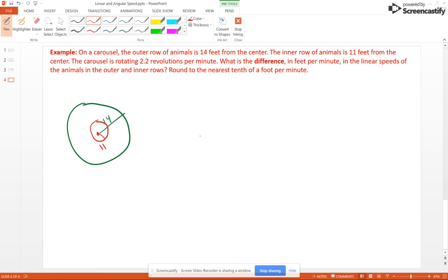Now, our carousel is rotating, so omega at 2.2 revolutions per minute. And let's just go ahead and change that into radians. So 2.2 times 2 pi, of course, is 4.4 pi.